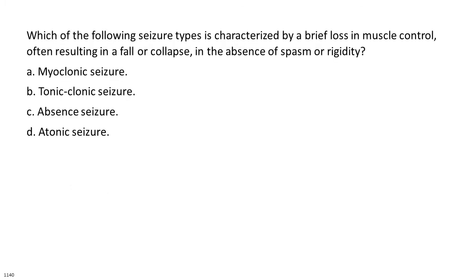Which of the following seizure types is characterized by a brief loss in muscle control, often resulting in a fall or collapse, in the absence of spasm or rigidity? A. Myoclonic seizure. B. Tonic-clonic seizure. C. Absence seizure. D. Atonic seizure.